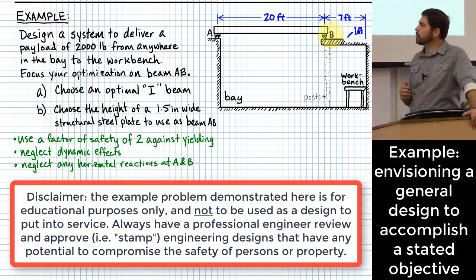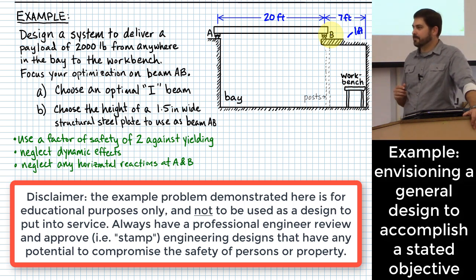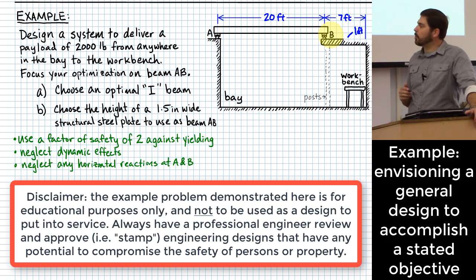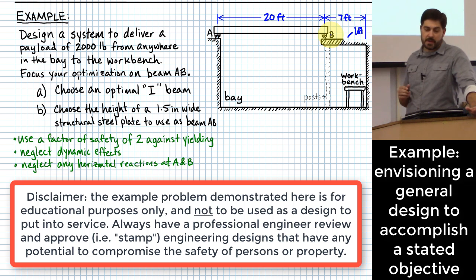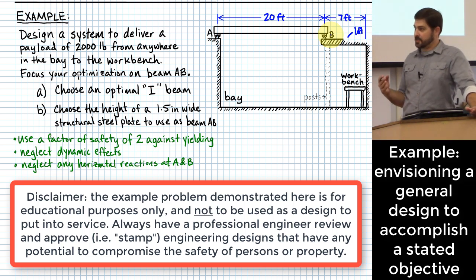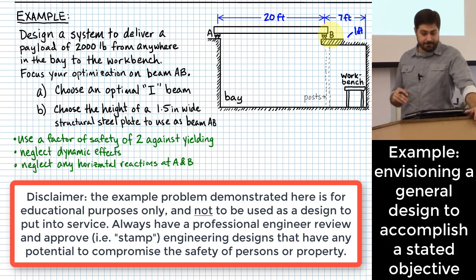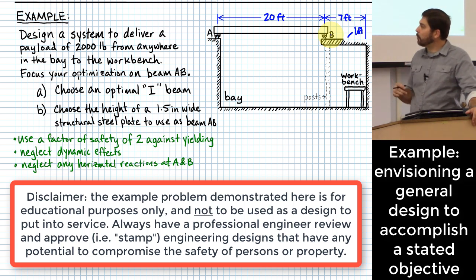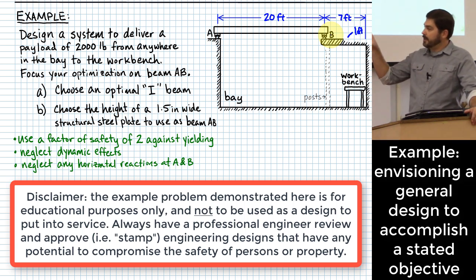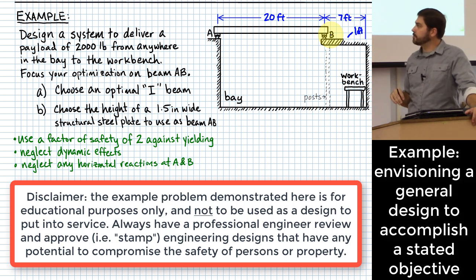The tricky part was that he had a workbench under the loft and wanted to get stuff over onto that workbench. The first part of this design problem is not so much about optimization — it's more the artsy type of thinking: how would we set up a system to pick something up off the floor and get it over onto the workbench from anywhere?